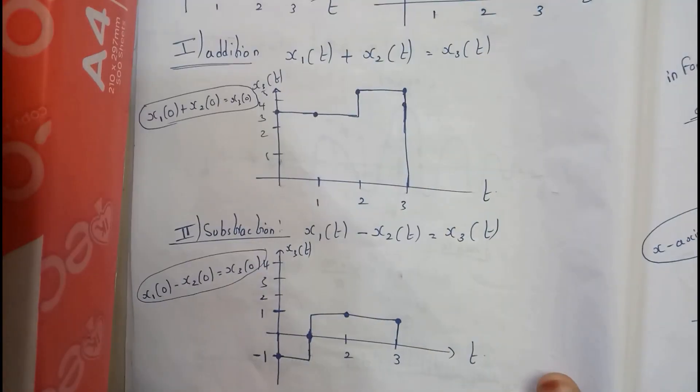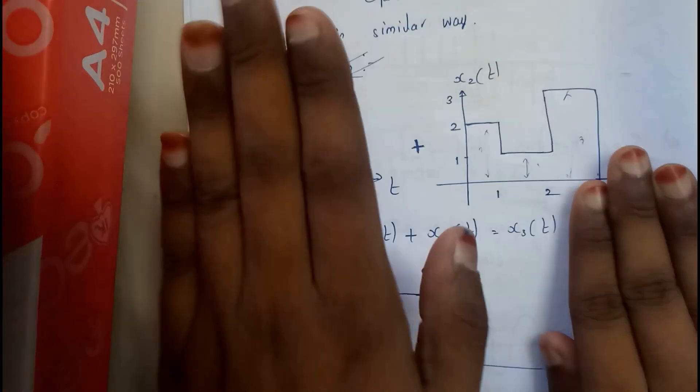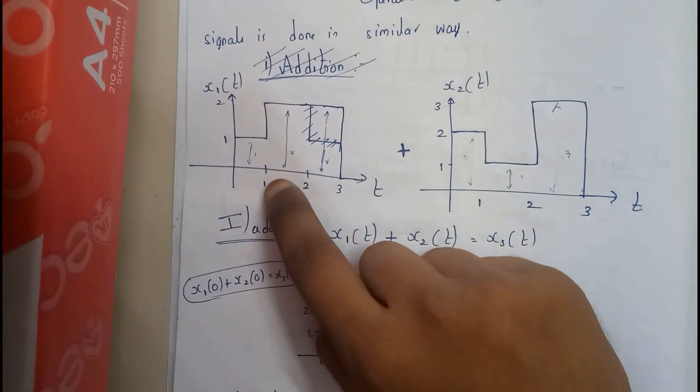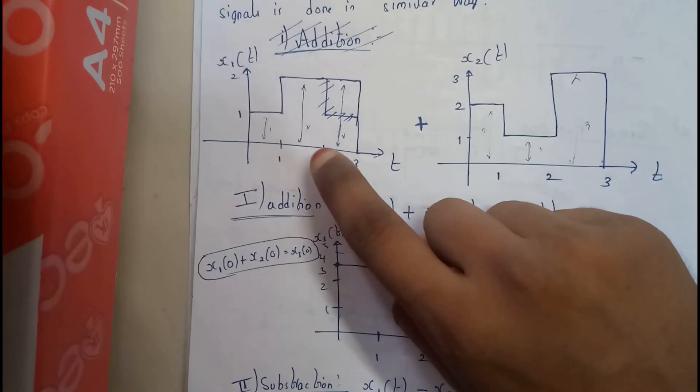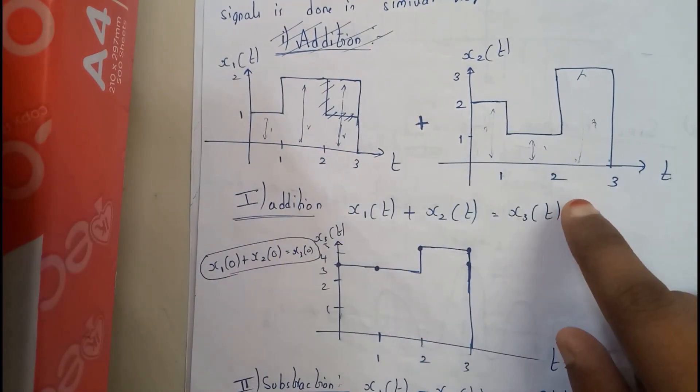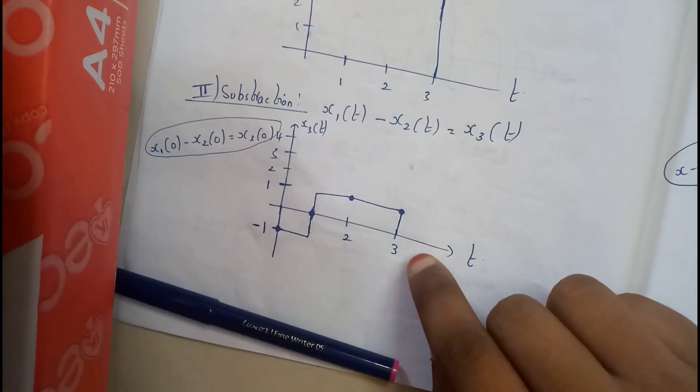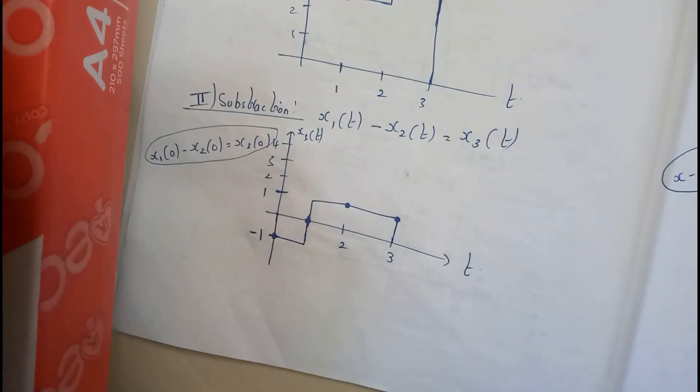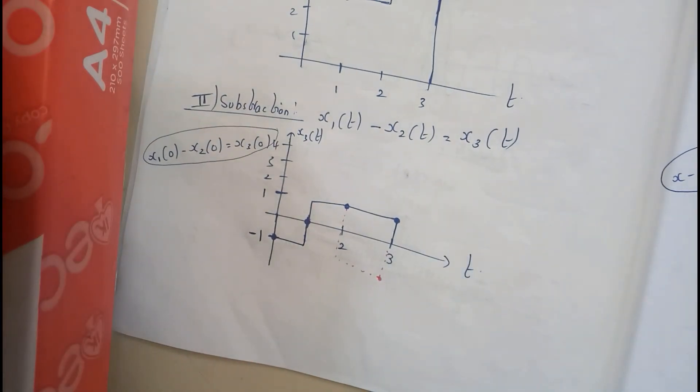Now let us go through subtraction. Subtraction is also similar to addition, but you'll be doing subtraction operation. Here we added this with this, so now we are going to subtract this with this. At zero, one minus two which is minus one, so the axis went directly down. At one it is two and at one it is one, so two minus one is positive one, so it came back to positive. At two it is two and at two it is three, so two minus three is minus one. Again at three it is two and at three it is three, so two minus three it should be minus one, but I have just kept one - it should go down back like this, crossing down here.